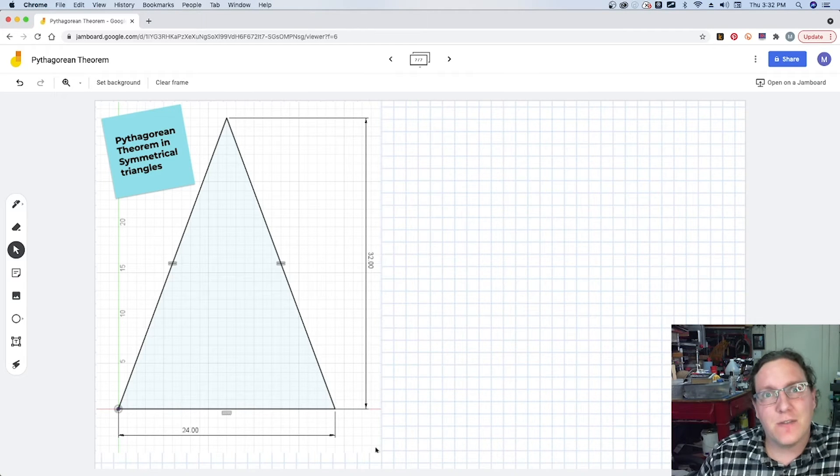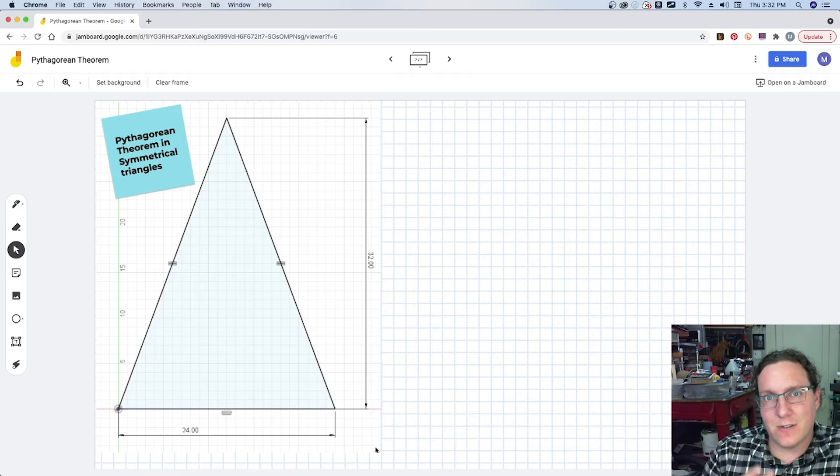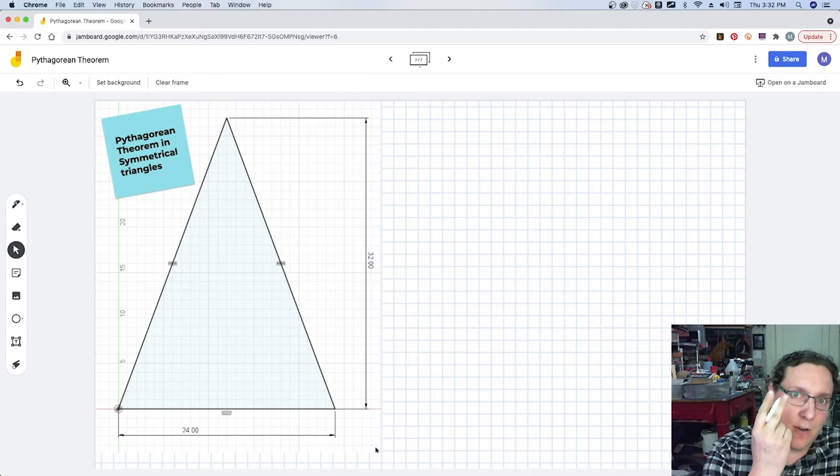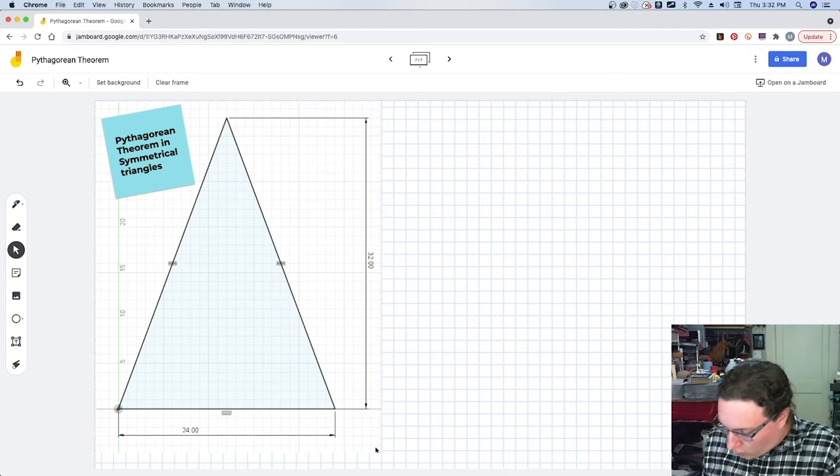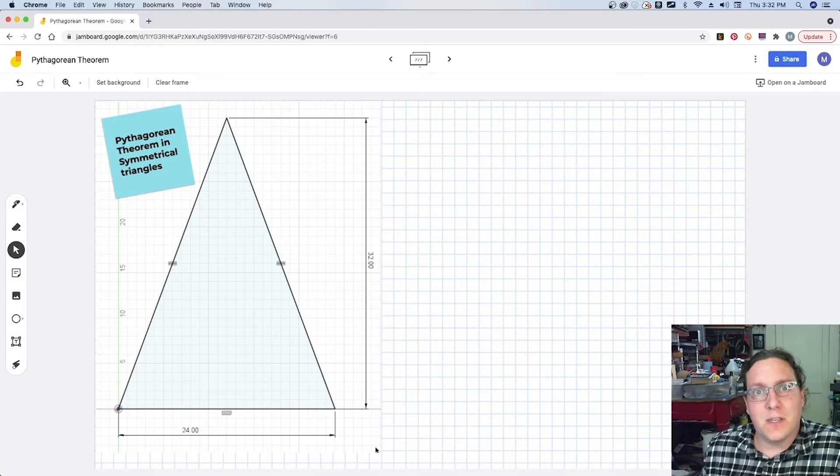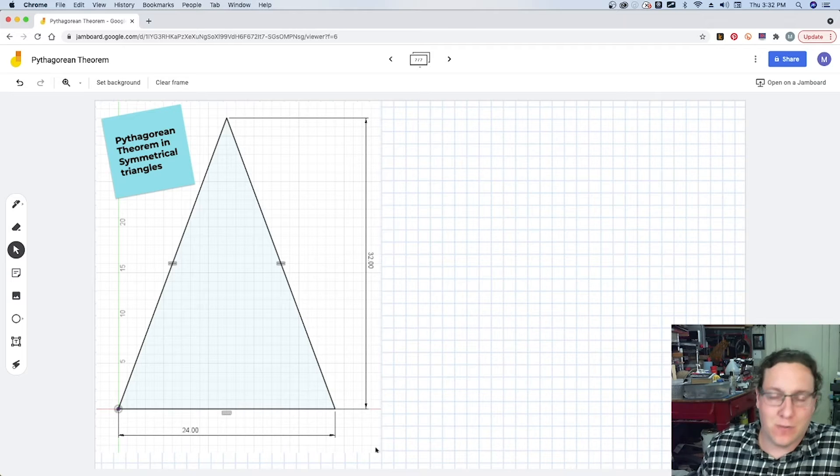The answer is pretty simple. We're actually going to use Pythagorean's Theorem because there are two right triangles, and there are two right triangles because the core idea in this problem is we're looking at a symmetrical triangle.